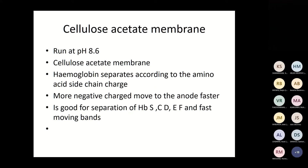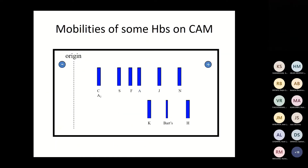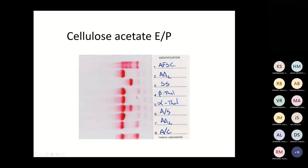Cellulose acetate is a manual method running at pH 8.6, separating haemoglobins according to amino acid side chains — more negatively charged molecules migrate towards the anode faster. It's good for separating S, C, D, E, F, and fast-moving bands. On the membrane, C and A2 run together; S, F, and A run together; K, Barts, J, N, and H run fast. C, O, E, A2, C-Harlem, and S-G hybrids fall in the C window; S, D, G, and Lepore fall in the S window.